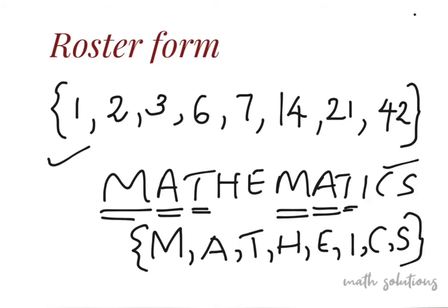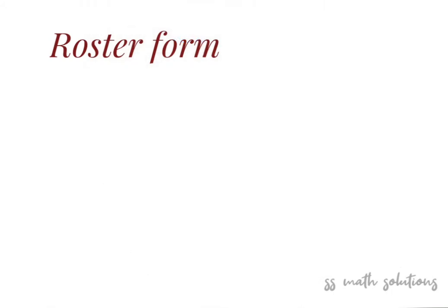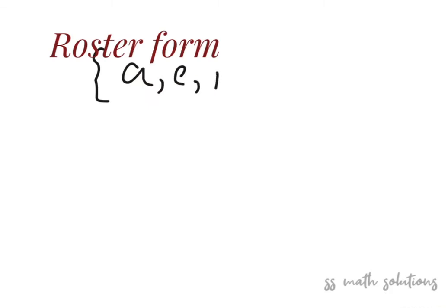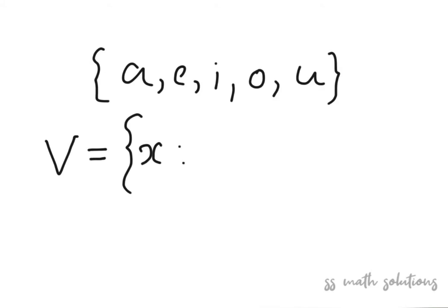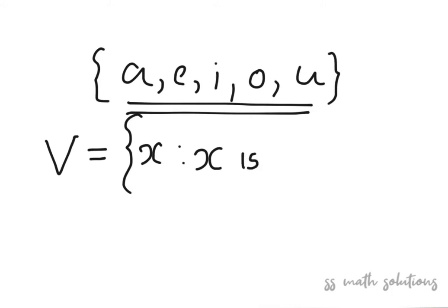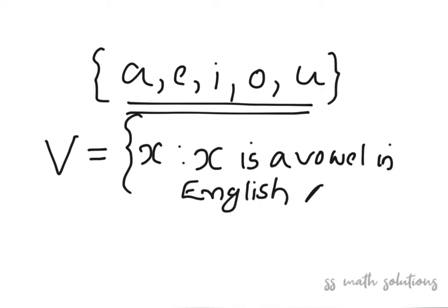Now, the set builder form. For example, the vowels in the English alphabet are A, E, I, O, U. We can denote this with the set builder form. For the set builder form, we need a name for the set — I am taking V for vowels. Then we represent a general element as x, followed by a colon meaning 'such that', and then write the characteristic property: x is a vowel in the English alphabet.